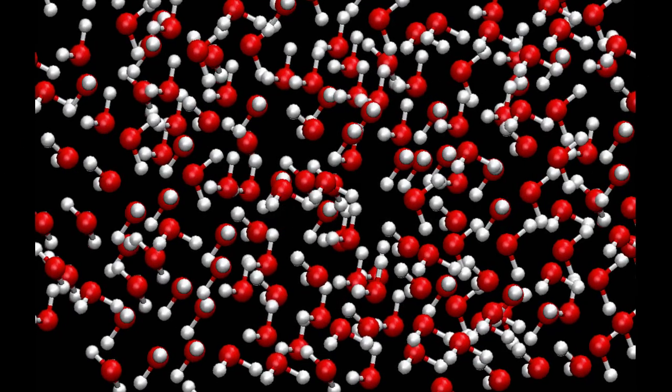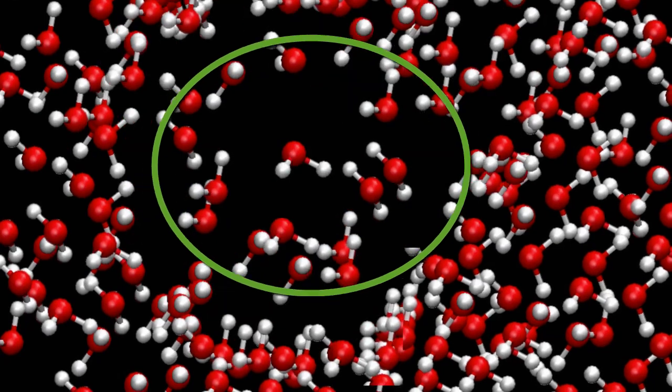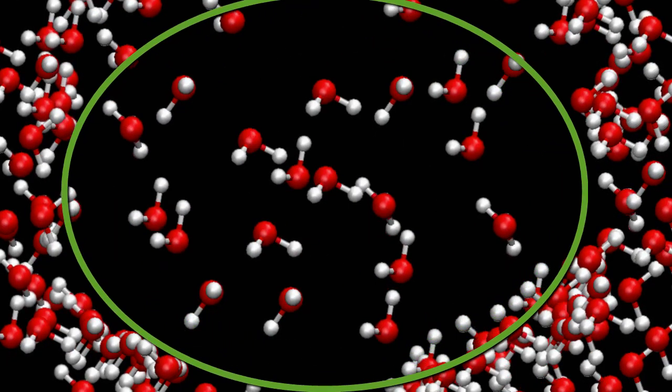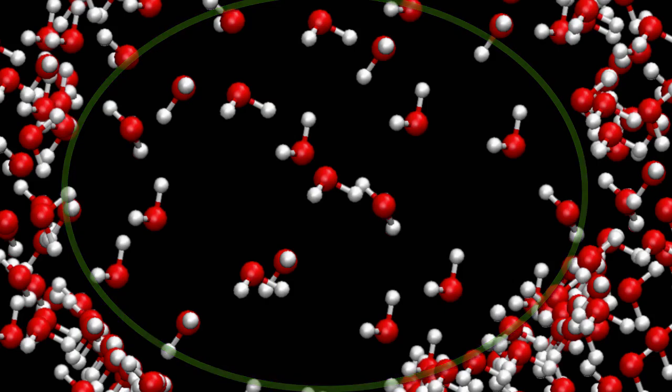To understand why bubbles form during boiling, imagine a group of water molecules, and as you add heat, some of them spread out and form a gas, water vapor. When they spread out, they push the molecules around them away, and that forms the bubble that you see. That bubble rises to the surface. That's boiling.